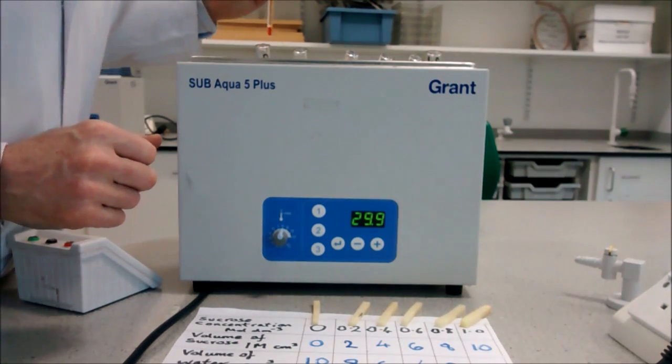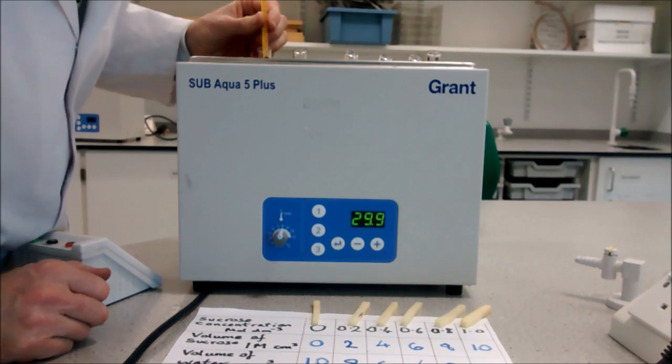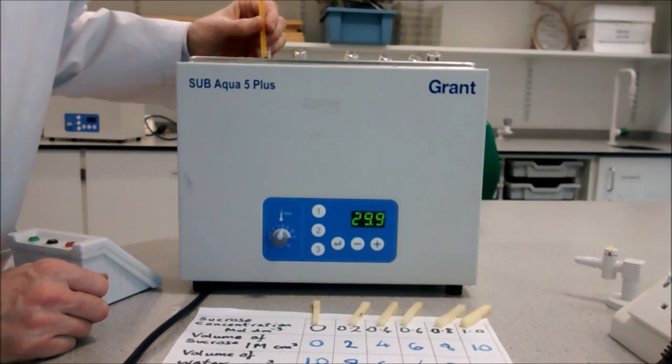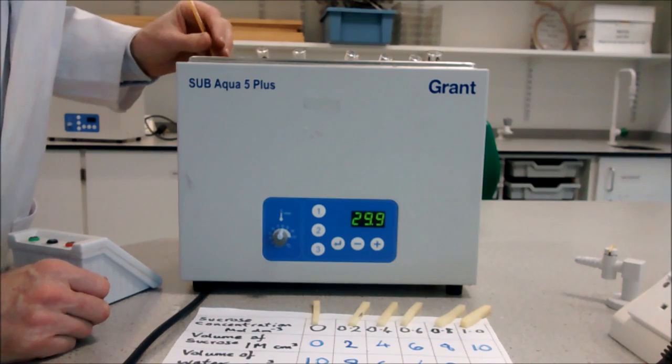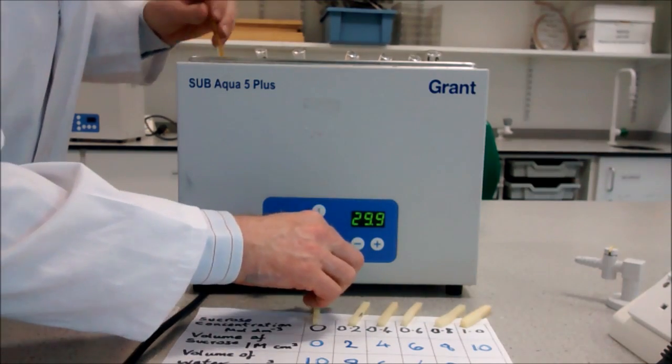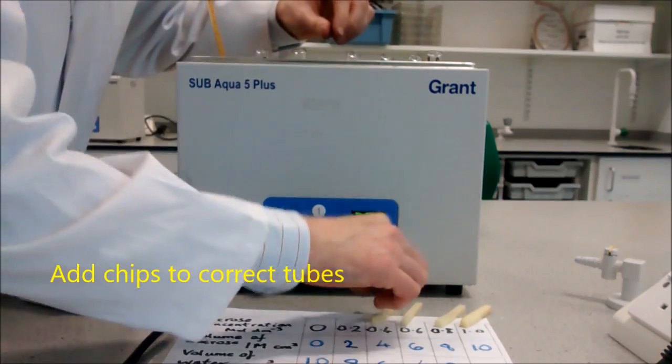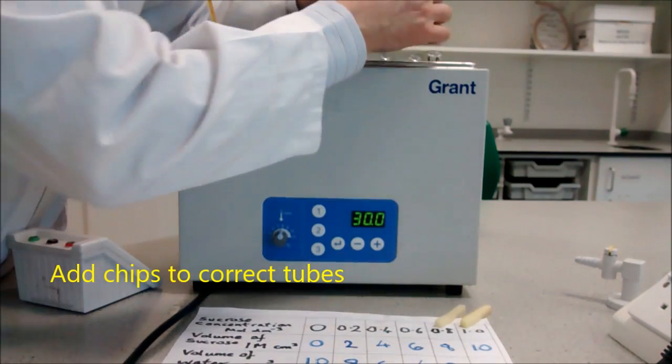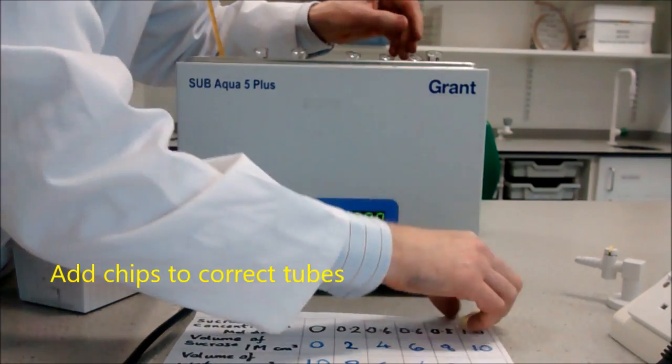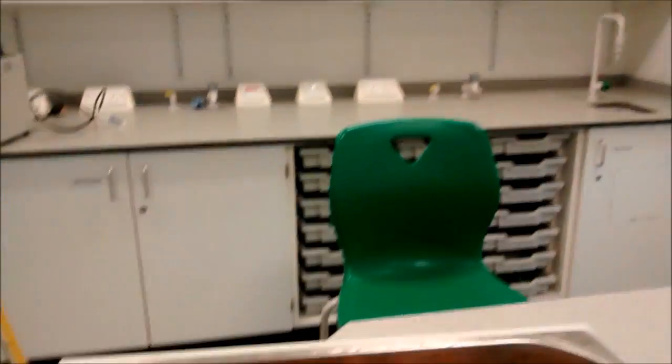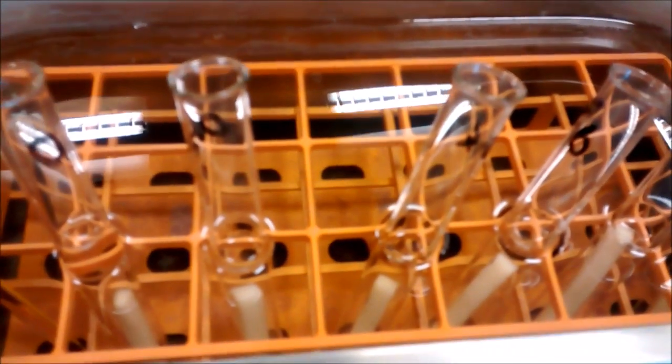When your tubes have come to constant temperature, in this case twenty-eight degrees Celsius, quickly add your chips to each tube: one, two, three, four, five, six. The chips remain in the water bath and should stay there for fifteen to twenty minutes.